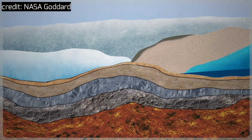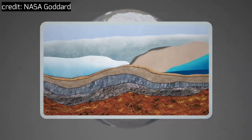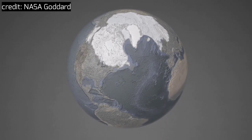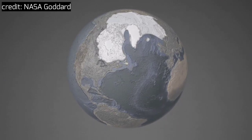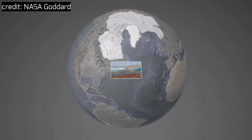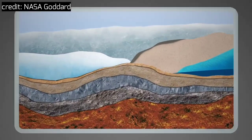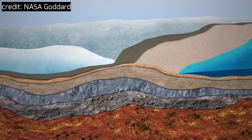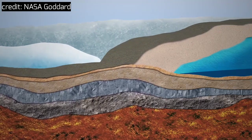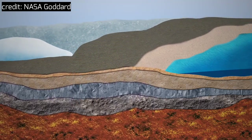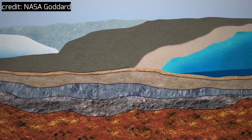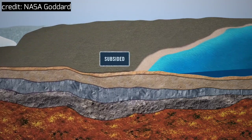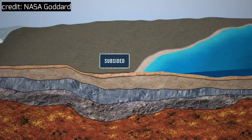Over time, these ice sheets began to retreat as part of Earth's natural cycle of glaciation and melting, and as a result, the already subsided land began to rebound. When the land rose up, the previously uplifted land sank, causing the sea level to rise relative to the ground.